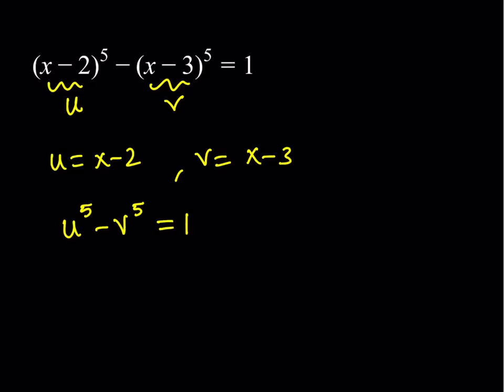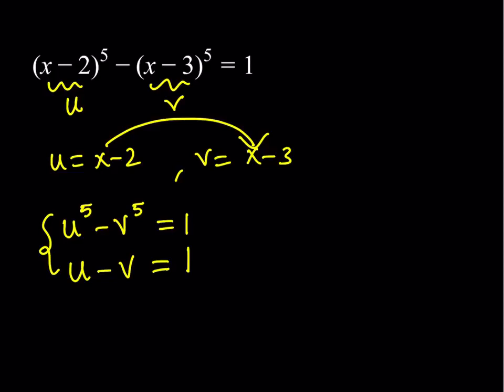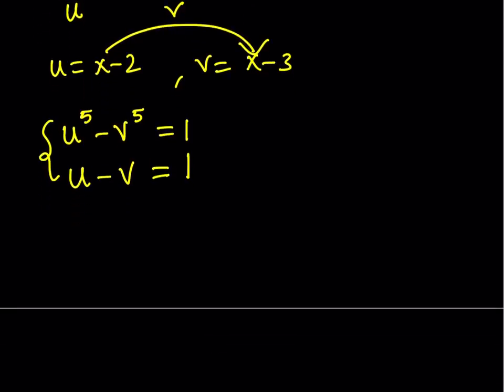My second equation comes from the fact that x minus 2 is 1 greater than x minus 3, so if I subtract u and v, the difference is going to be positive 1. This is the system I was trying to get. A lot of times when we have a system, we try to reduce the number of variables — here, we're doing the opposite, going from one variable to two variables. I'm not going to replace u with v plus 1; instead, I'm going to factor u to the fifth minus v to the fifth.